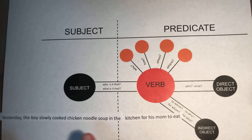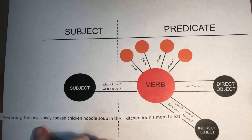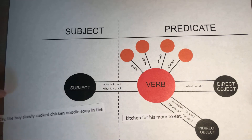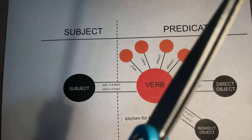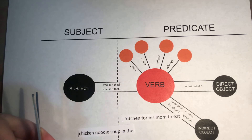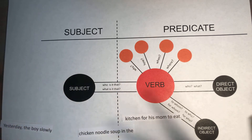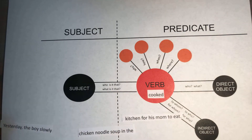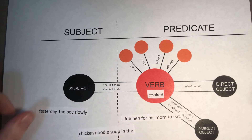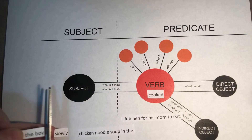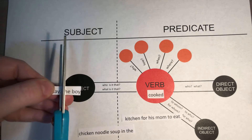Let's start with our first sentence: 'Yesterday the boy slowly cooked chicken noodle soup in the kitchen for his mom to eat.' We know that 'cooked' is our verb because that's our action. So let's cut out 'cooked.' We'll try to keep our sentence in order as much as possible here so we don't get too mixed up. There's our verb 'cooked,' and we know our subject would then be 'the boy.' So let's cut out 'the boy.'